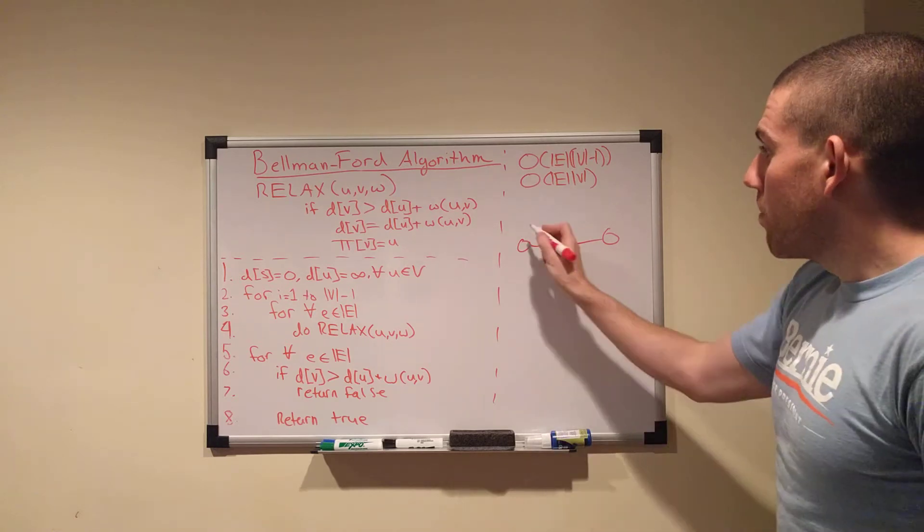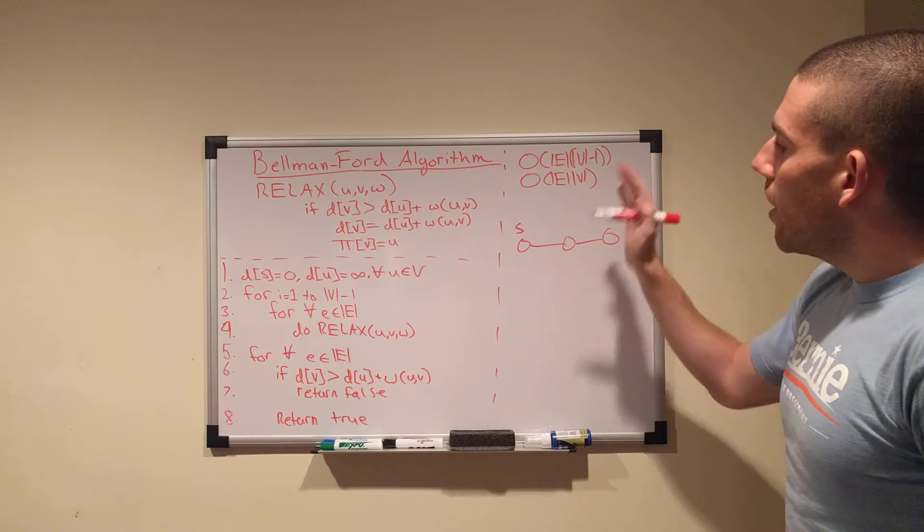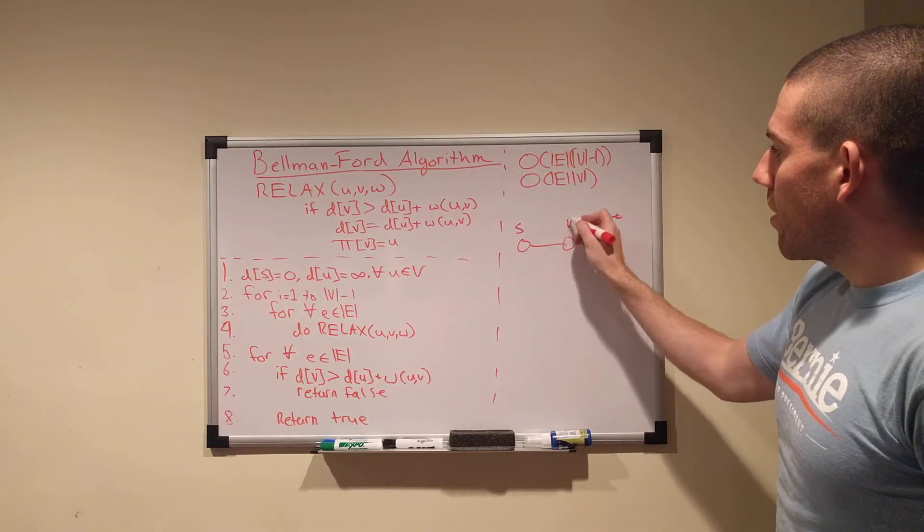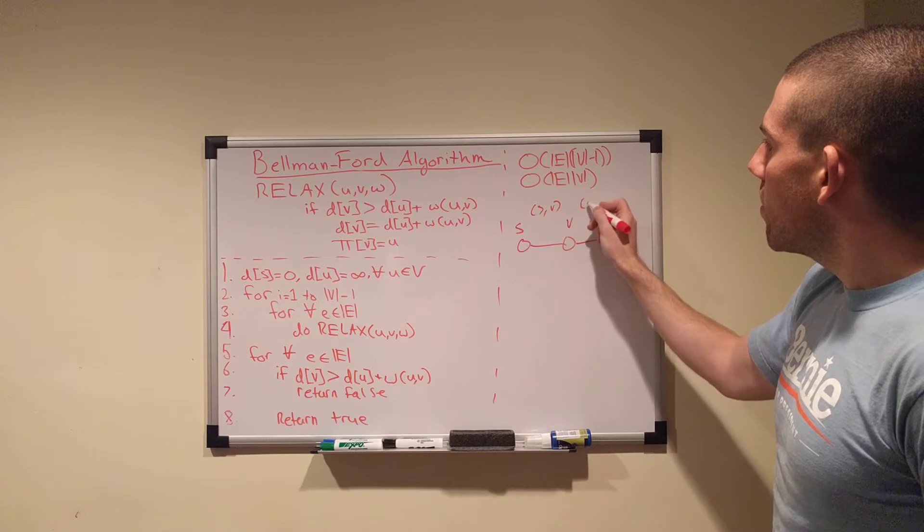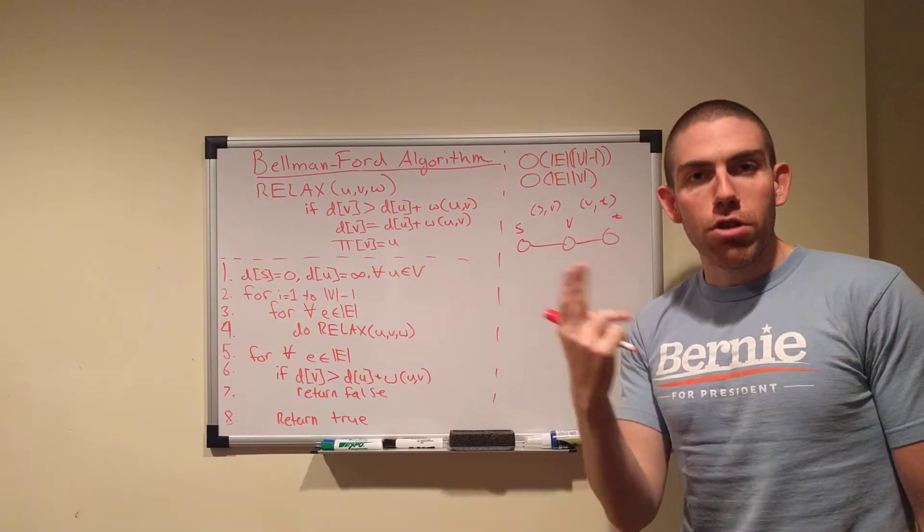If you computed the shortest path from, say, your S to T here, if this is S, this is T, then you're going to have, let's say this is V, then you'd have S to V, V to T. Those would be the edges in your shortest path. You'd have two edges, you'd have V minus 1 edges.